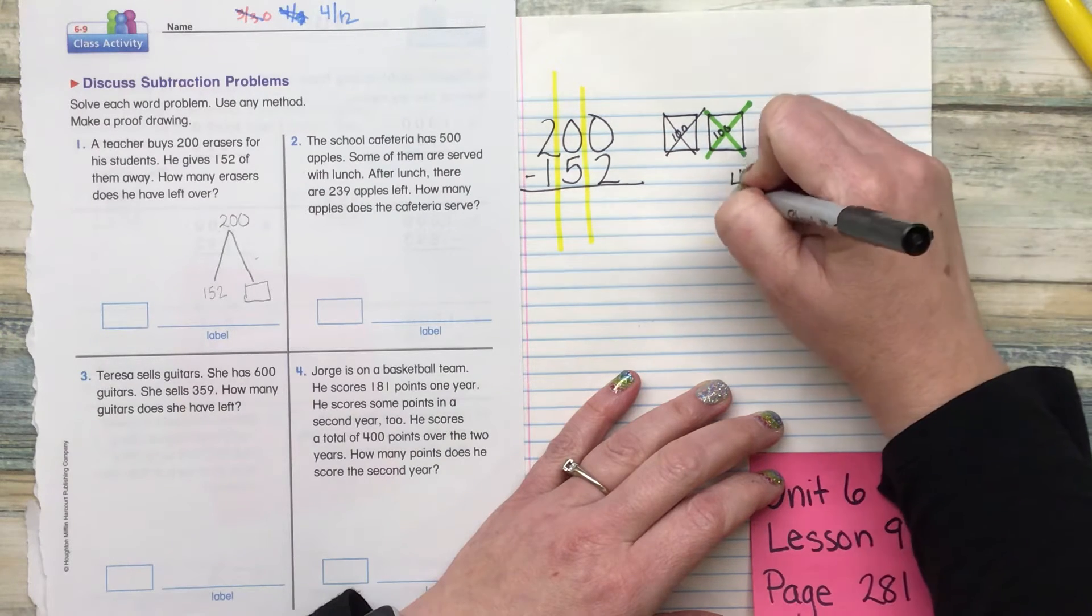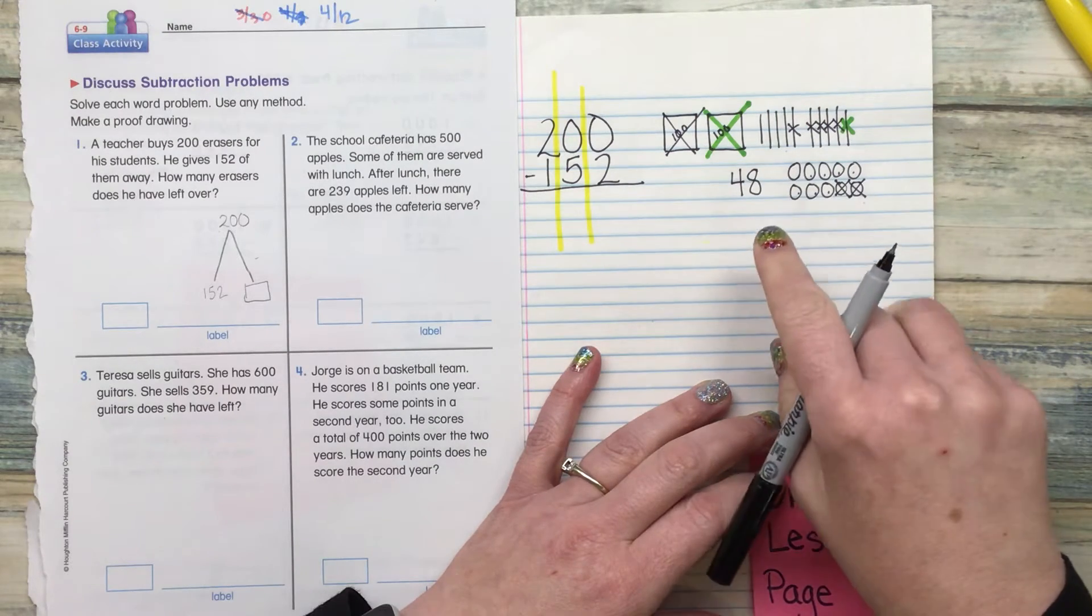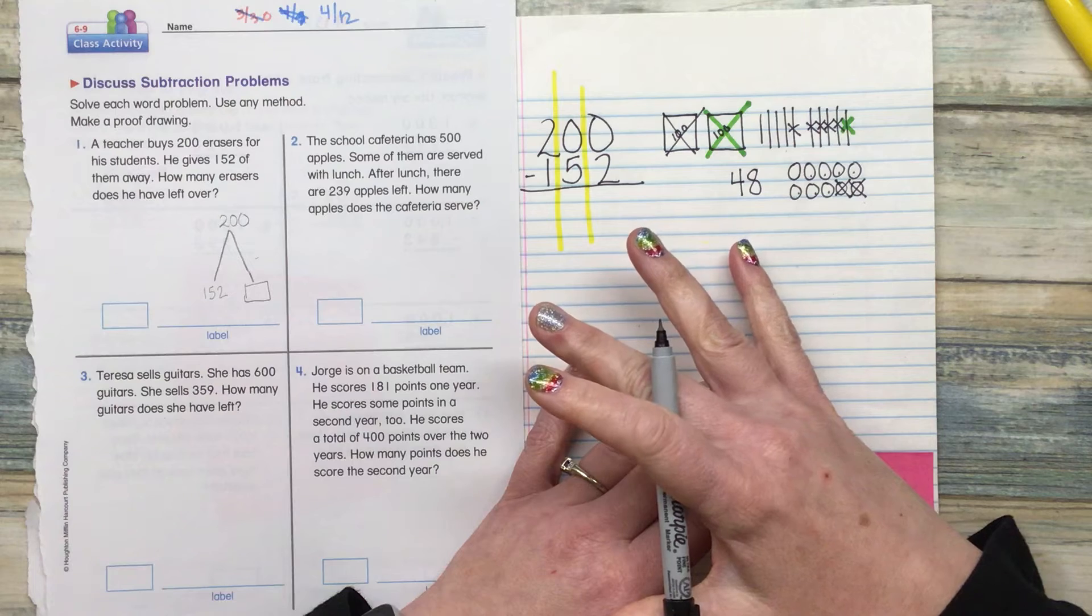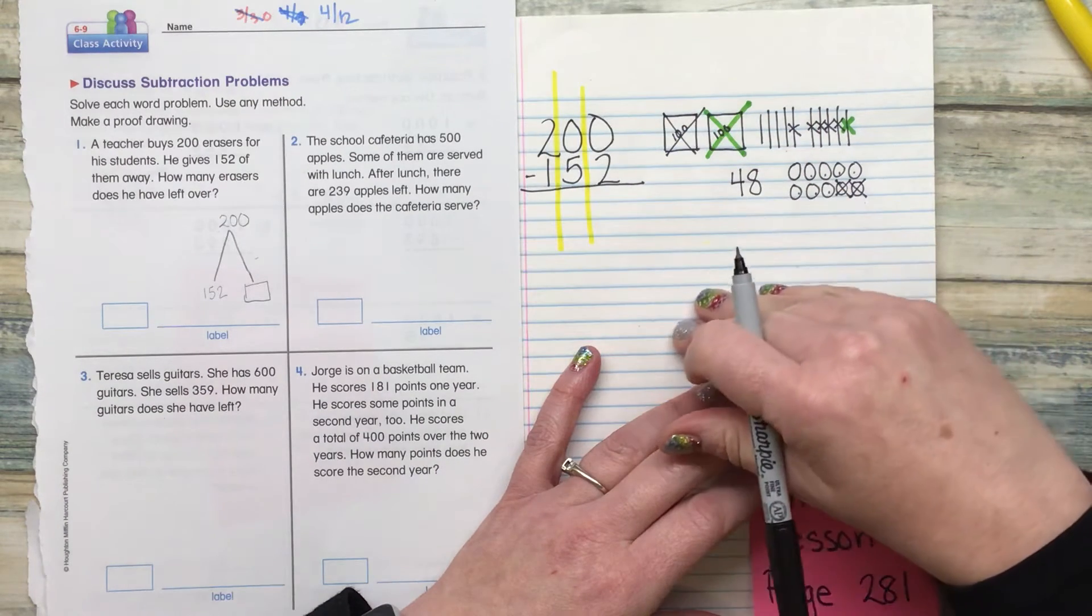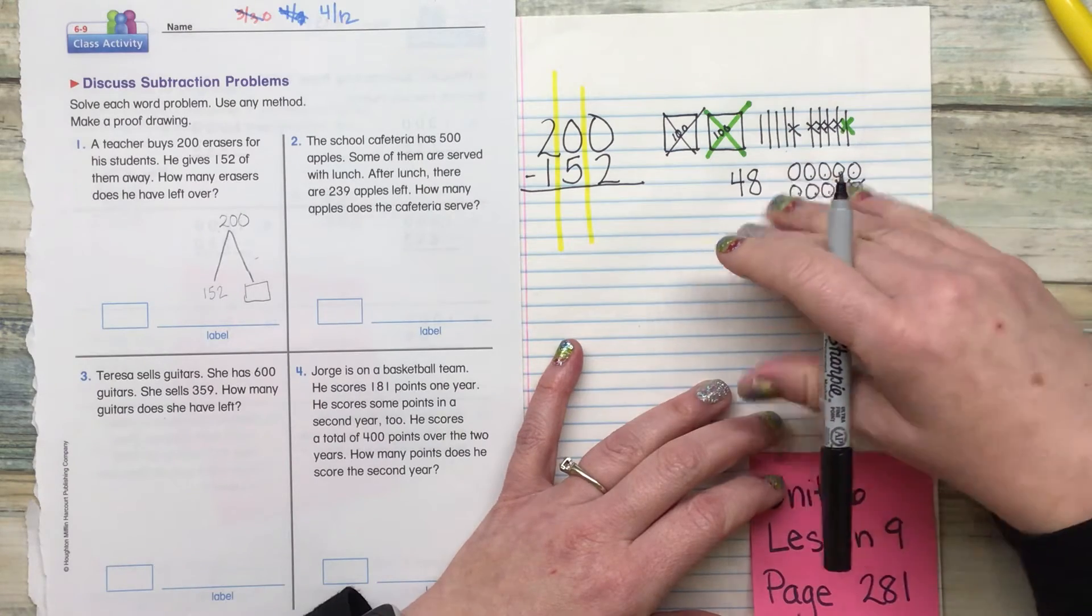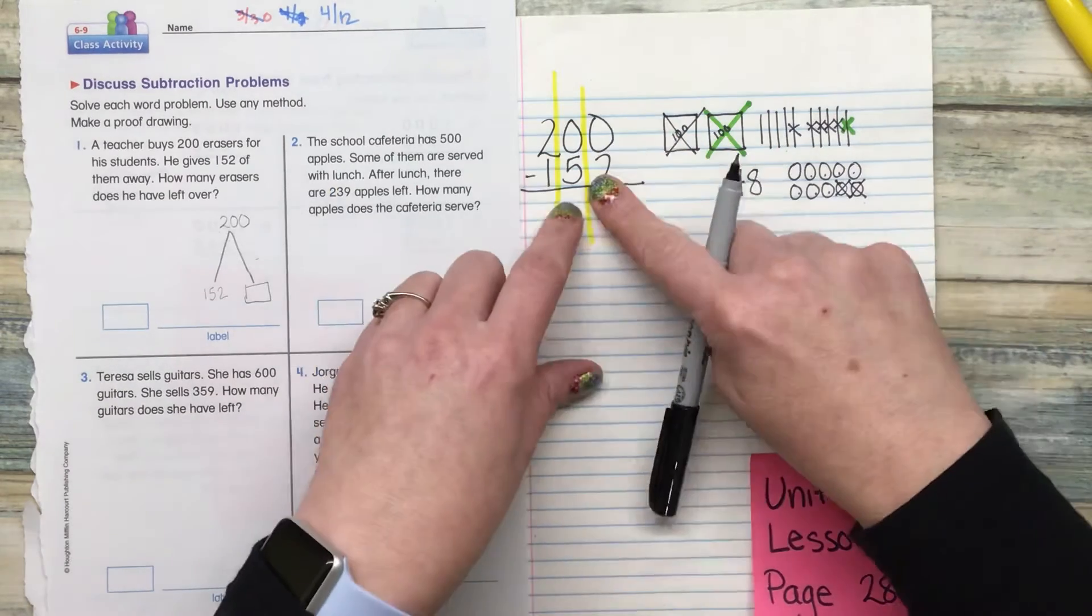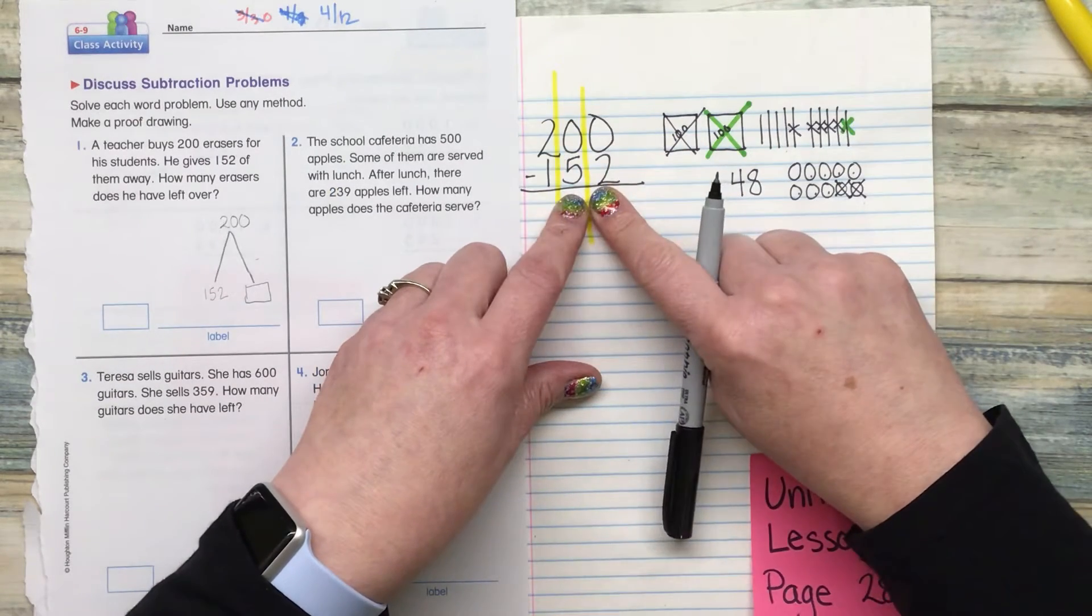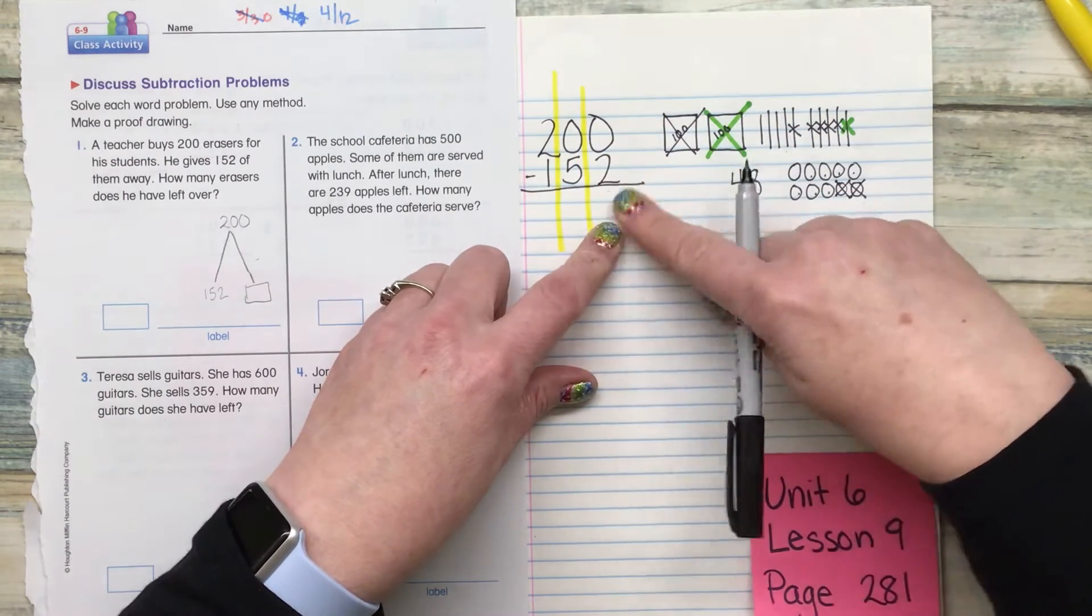So when I did my proof drawing, I ended up with 48. I prefer the ungrouping first method so that once I get to going on my subtraction, I am going to be able to subtract everything. So that's what my answer over here for the proof drawing. Now I'm going to work on the equation.